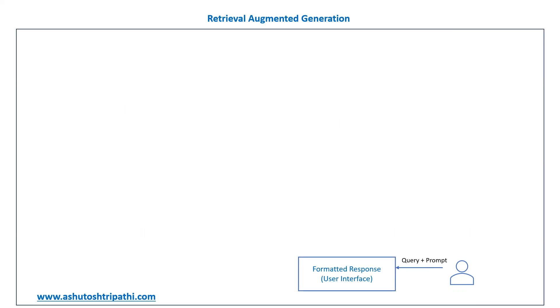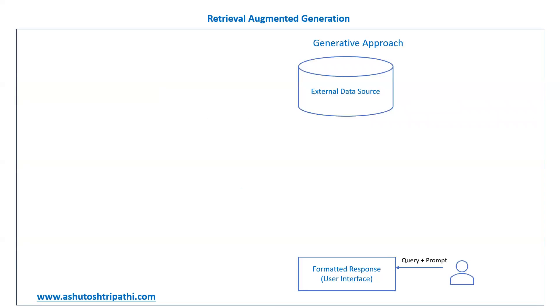With the help of a diagram: there is a user who has a question, comes up with a query, and adds a certain prompt so the response is formatted. They interact with a user interface where the backend engine is an LLM — a large language model. The LLM generates text. I'm focusing on text-based approaches here, not multi-modal. External data is converted to embeddings via an embedding model.